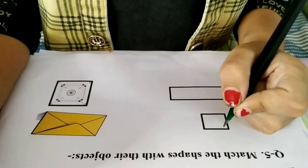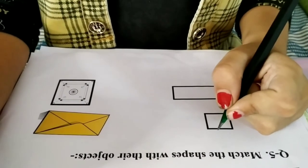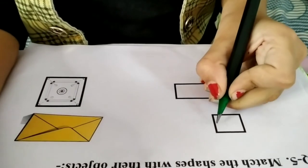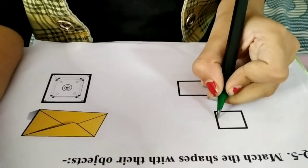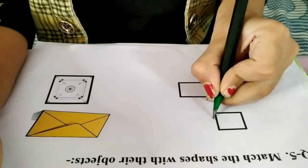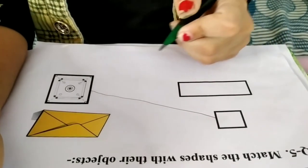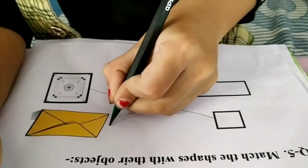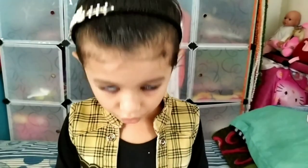Question 5. Match the seeds with their objects. Square. Rectangle. Thank you. Bye-bye.